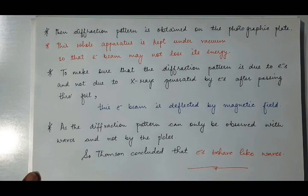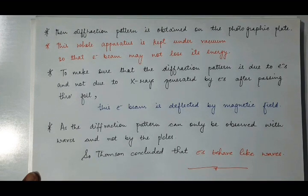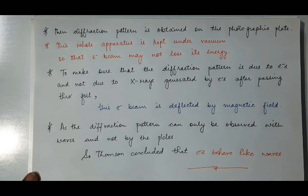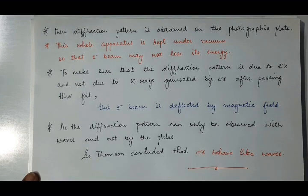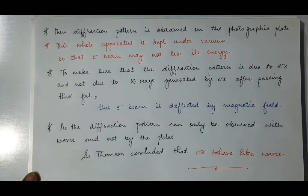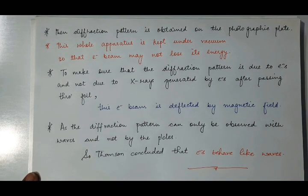To ensure that the diffraction pattern is because of the electron beam and not because of X-rays produced, Thomson used a magnetic field. Because we know that the electron beam is a charged beam, it will get deflected by the magnetic field. If the final diffraction pattern is because of electrons, then the electron beam will be deflected by the magnetic field. But if it is produced by X-rays — which are neutral and uncharged — they will not be affected by the magnetic field. What he observed was a deflection in the direction of the electron beam under the effect of the magnetic field, which confirms that the final diffraction pattern is because of the electron beam and not because of X-rays.